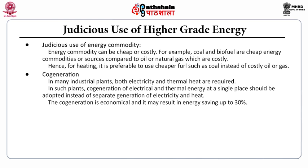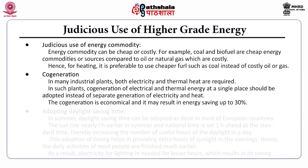Another principle is co-generation. In many industrial plants, both electricity and thermal heat are required. In such plants, co-generation of electrical and thermal energy at a single plant should be adopted instead of separate generation of electricity and heat. Co-generation is economical and may result in energy savings of up to 30%.